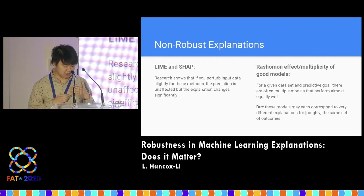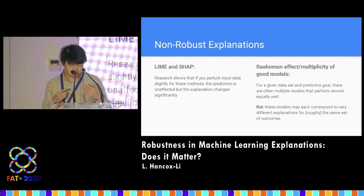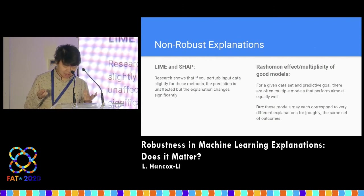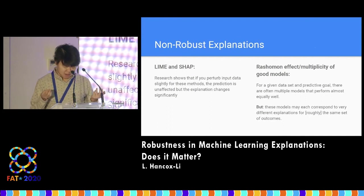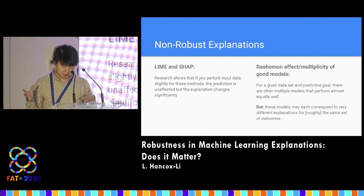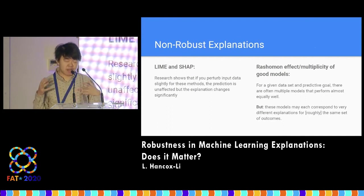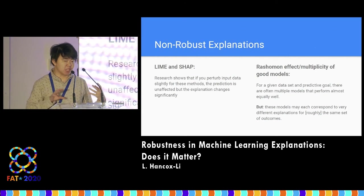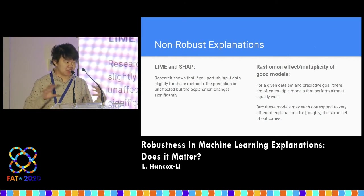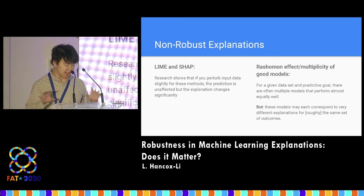There's another well-known effect called the multiplicity of good models, or the Rashomon effect: for a given dataset and predictive goal, you can often find multiple models that perform almost equally well, but each may correspond to very different explanations. So there's no consensus among these different models about what the explanations are.